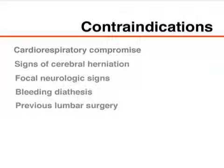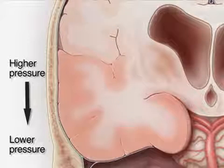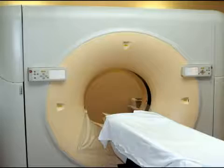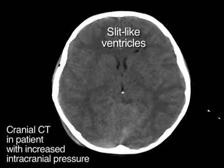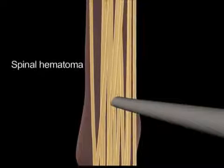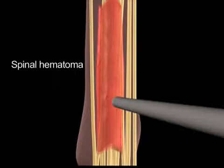There are specific contraindications to lumbar puncture. The condition of patients with cardiorespiratory compromise may worsen as a consequence of the position they need to assume. The procedure should also be avoided in patients with signs of cerebral herniation, incipient herniation, or increased intracranial pressure, and in those with focal neurologic signs. In such patients, cranial CT should be performed before lumbar puncture, although CT may not reveal signs of increased intracranial pressure. Finally, there is an increased risk of a spinal hematoma if a coagulopathy is present or if the patient is receiving anticoagulant therapy.